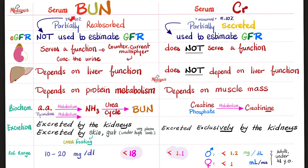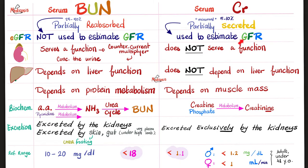Now let's compare serum blood urea nitrogen versus serum creatinine. Serum BUN is partially reabsorbed — the kidney takes back about 40% of that urea, from the kidney's tubule to the kidney's interstitium, because it helps concentrate the urine. Since BUN is partially reabsorbed and 40% is a significant amount, we cannot use BUN to estimate GFR accurately. But look at serum creatinine — it is partially secreted, but only 5–10%, so you can correct for that. It's not outside the range useful for GFR estimation. So we can use creatinine clearance to estimate GFR.